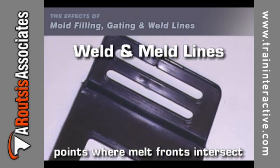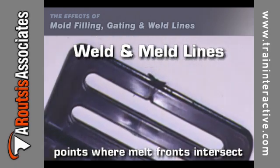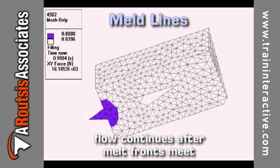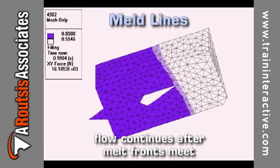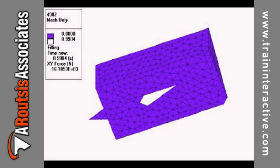Weld and meld lines are points where the melt fronts intersect. Meld lines are formed when the melt front is divided by a mold feature, such as a core pin, and then meets afterward to continue flowing. When the melt flow continues after the melt fronts meet, the intersection is called a meld line.